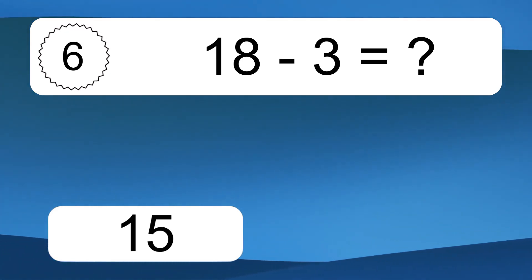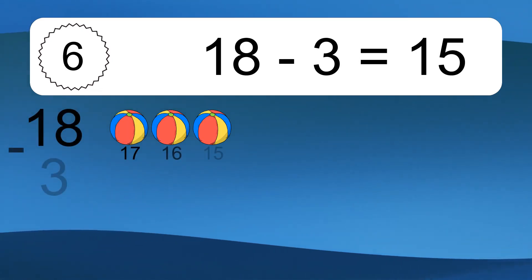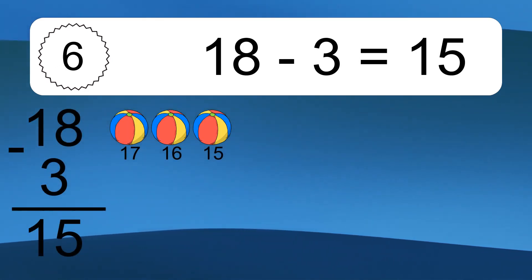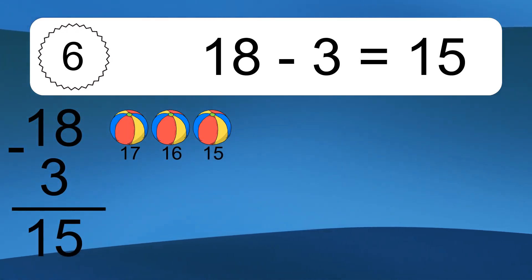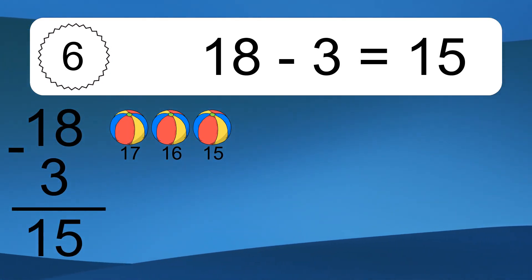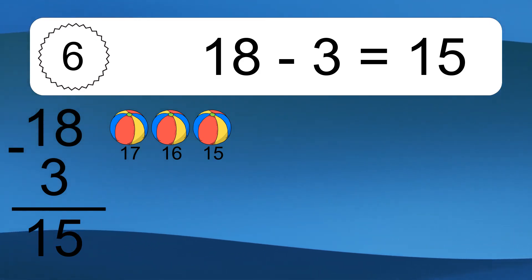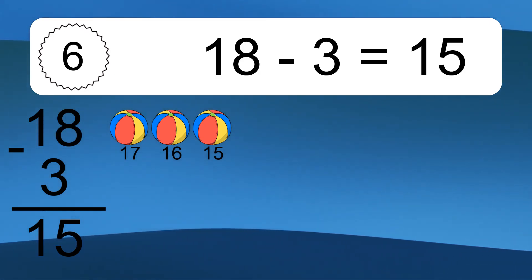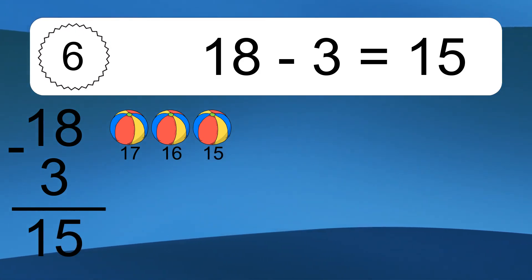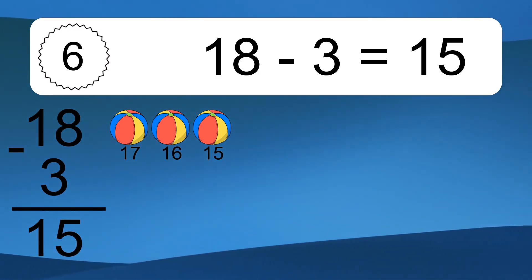18 minus 3 equals what? 18 minus 3 equals 15. Let's count it. 17, 16, 15.